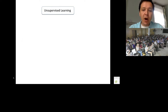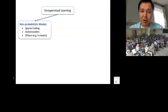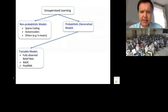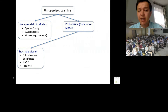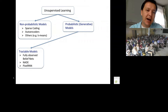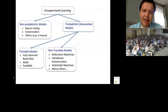In unsupervised learning there's a class of non-probabilistic models — models like sparse coding, autoencoders, and versions of k-means algorithms — that don't really rely on probabilities and are used quite successfully. Then there are probabilistic models, sometimes called generative models. There's a class of fully tractable models like fully observed belief networks, neural autoregressive density estimators, and pixel recurrent neural networks.